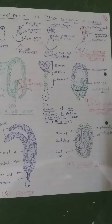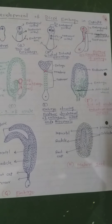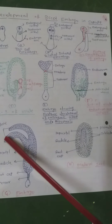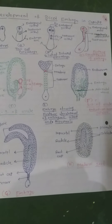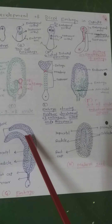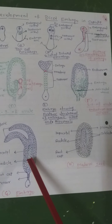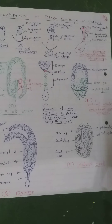The hypophysis by further division gives rise to a part of the radicle and root cap. Subsequently, cells in the upper tier of the octant divide in several planes to become heart-shaped, which then becomes two lateral cotyledons and terminal plumule. Further enlargement of hypocotyl and cotyledons results in curvature of the embryo, and it appears horse-shoe shaped. This is the development of embryo in dicotyledons.